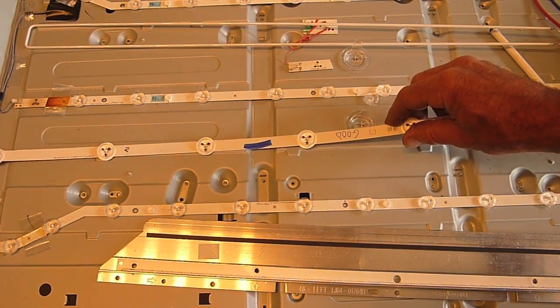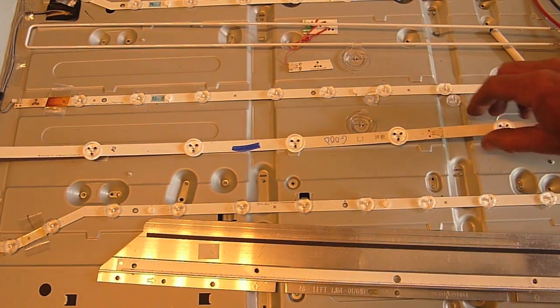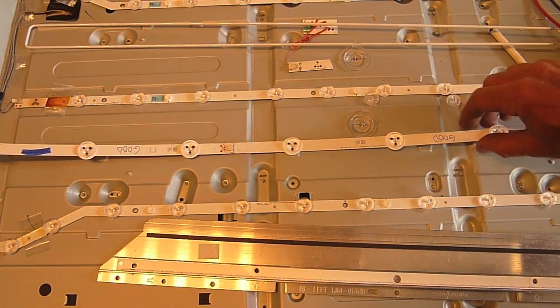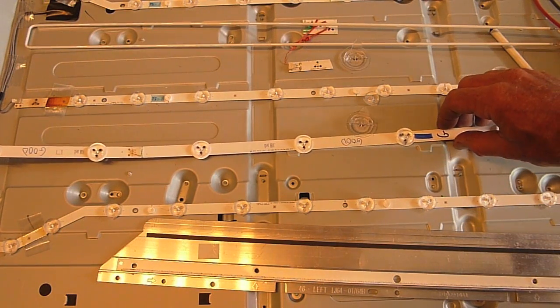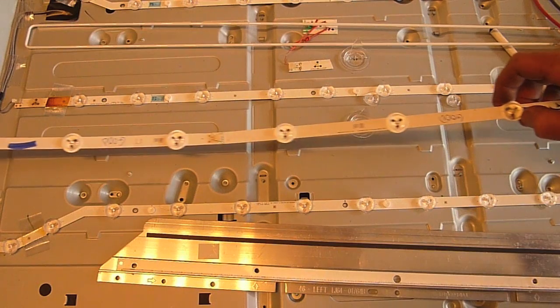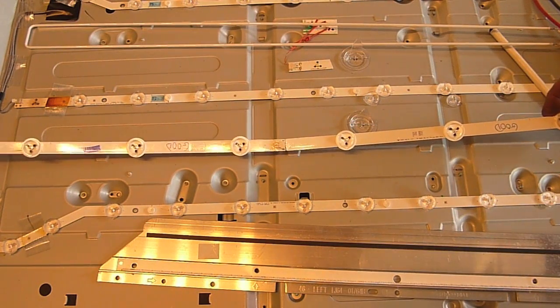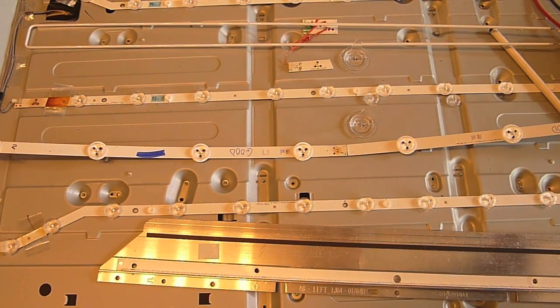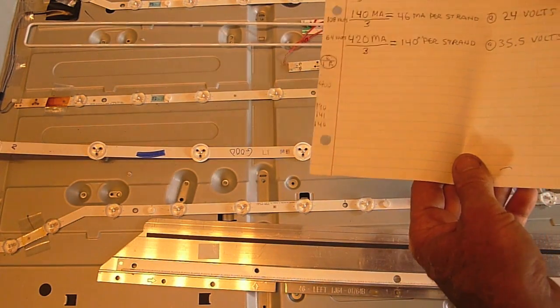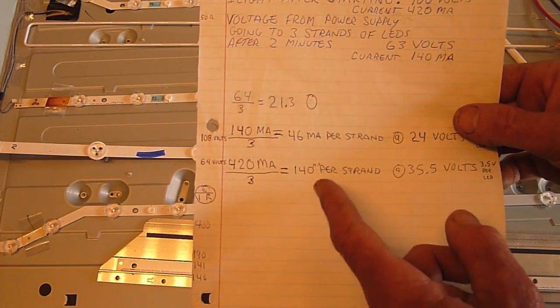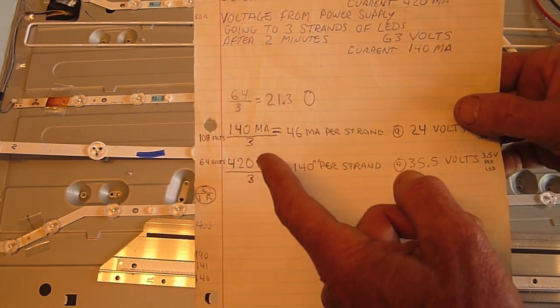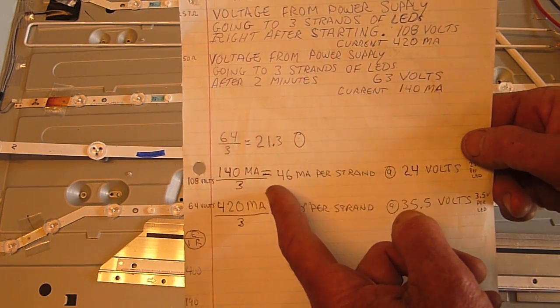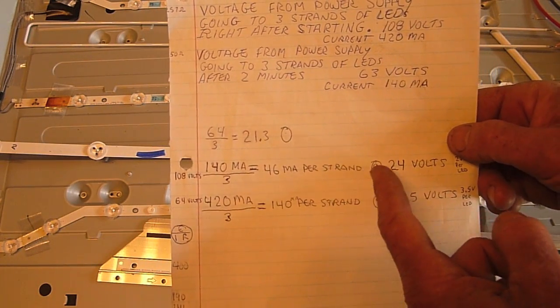The TV might only be a year or two old. I measured the current going to the LEDs on a couple of LG models, and one thing that surprised me was when I first turned the TV on, there would be almost three times the amount of current going to the LEDs for the first 10 seconds. I don't know if they've got a voltage regulation flaw or what. I measured 140 milliamps - that was 46 milliamps per strand times three - and then it went up to 420 milliamps for the first 10 seconds.